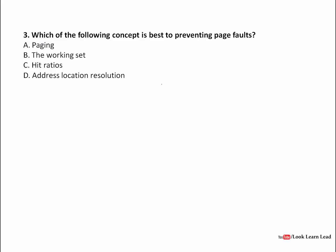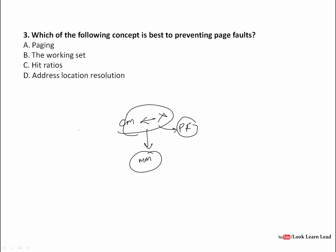The next question asks which concept is based on preventing page faults. A page fault occurs when we search for a page in cache memory and it is not there — we then search in main memory and if not found there either, a page fault occurs. To prevent page faults, we use the working set, which is a set of all pages required. The answer is working set.